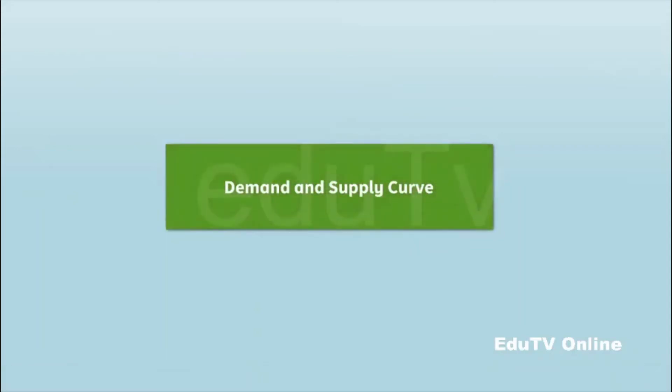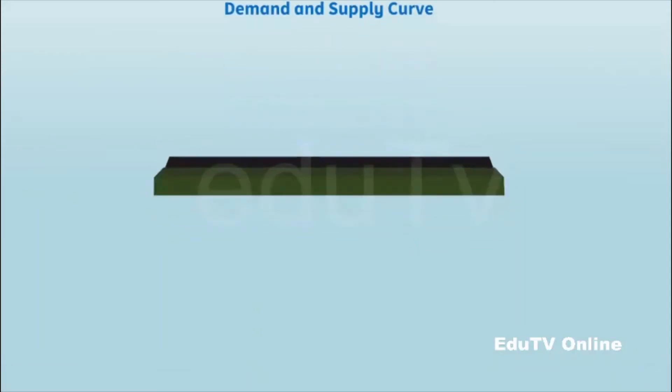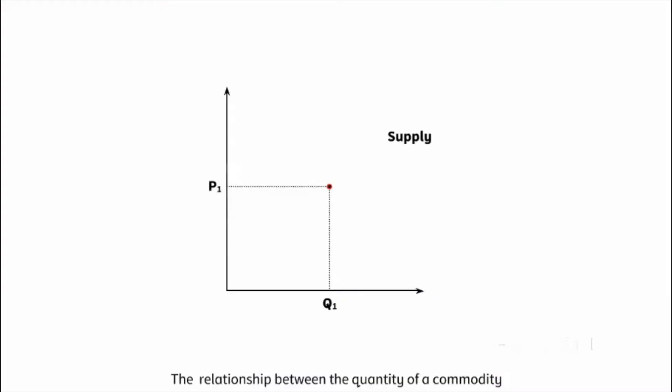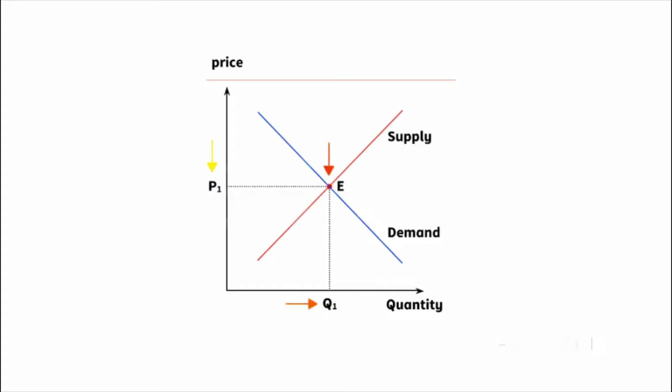Demand and Supply Curve. Let us study the demand and supply curve. Supply and demand in economics is the relationship between the quantity of a commodity that the producers wish to sell and the quantity that the consumers wish to buy. The price of a commodity is determined by the interaction of supply and demand curves.